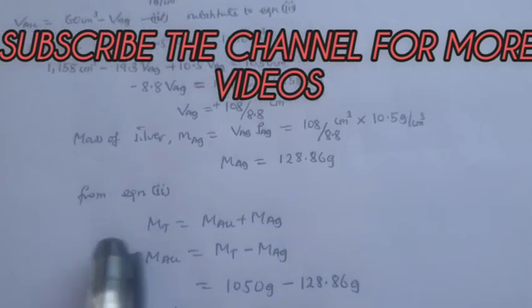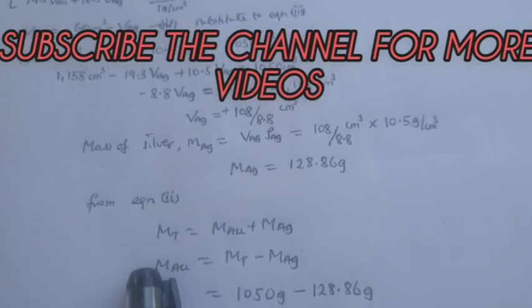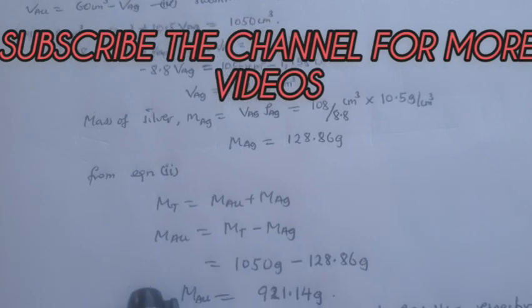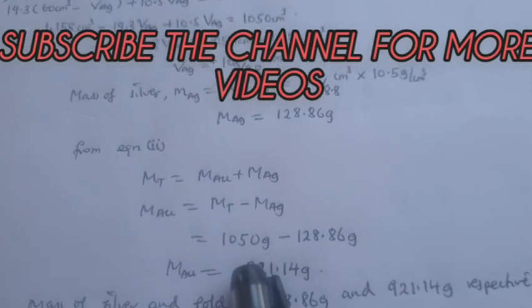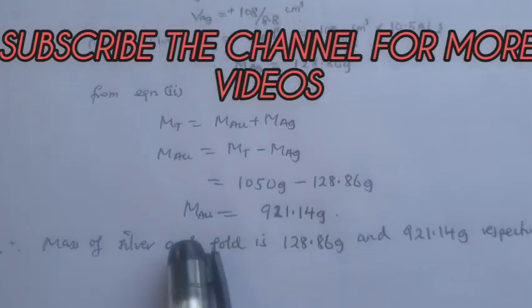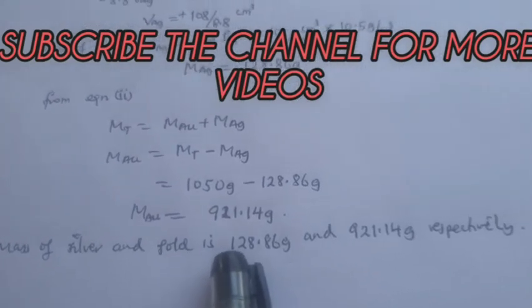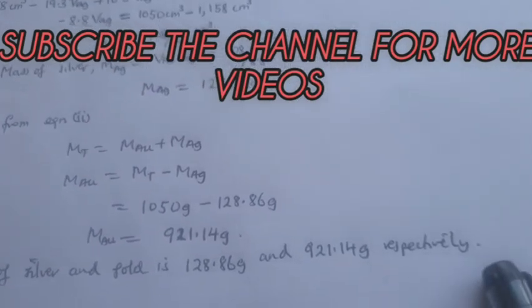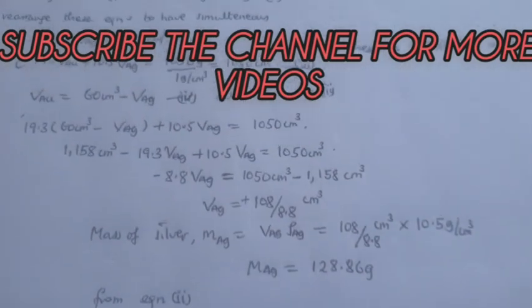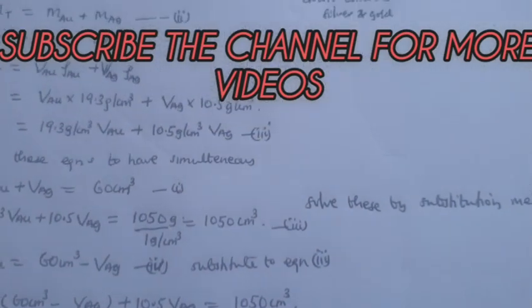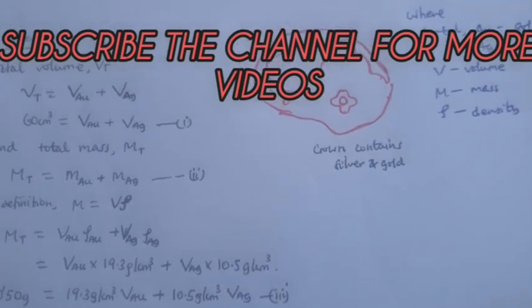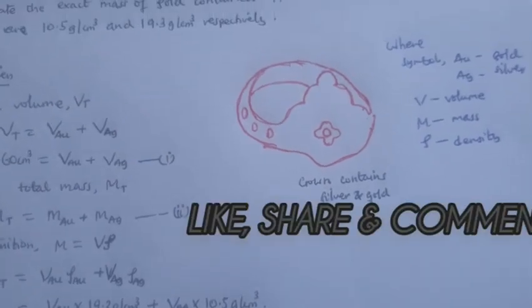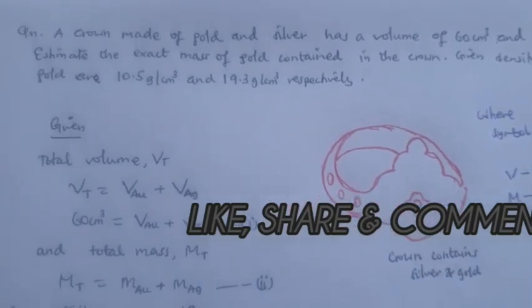From equation two we make the mass of gold the subject, which is 921.4 grams. The mass of silver and gold is as you can see here respectively. Thanks for watching, please like, share, comment, and don't forget to subscribe this channel for more videos.